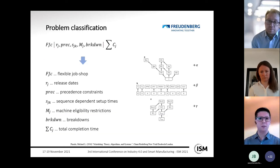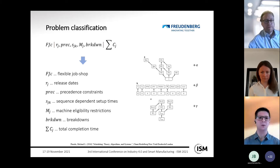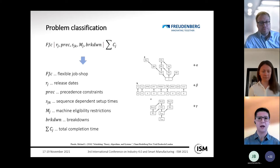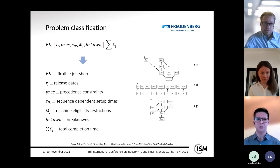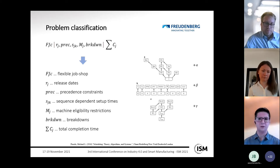Based on the problem description, a formal problem classification was done using the widely known alpha-beta-gamma three-field notation. Following this notation, the practical planning problem is situated in a flexible job shop environment. The restrictions include release dates, precedence constraints, sequence-dependent setup times, machine eligibility restrictions, and breakdowns. The objective function is total completion time minimization.